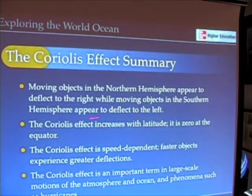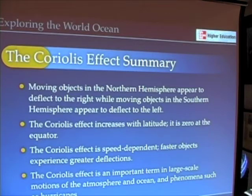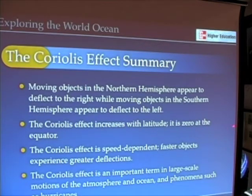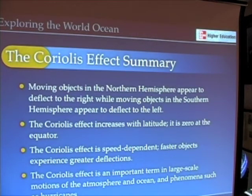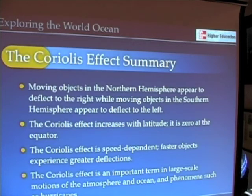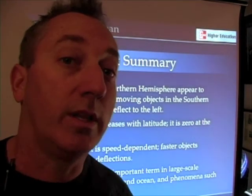Let's summarize the Coriolis effect. Moving objects in the northern hemisphere appear to deflect to the right; in the southern hemisphere, to the left. The Coriolis effect increases with latitude — it is strongest at the poles and zero at the equator. So a hurricane at the equator tends to stay there, but once it moves a bit north it begins deflecting to the right. The Coriolis effect is also speed dependent: faster objects experience greater deflection. Most importantly, it is a key factor in large-scale motions of the atmosphere, ocean circulation, and hurricanes. That concludes our lesson on the Coriolis effect.